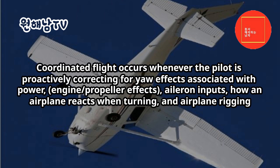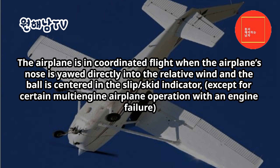Coordinated flight. Coordinated flight occurs whenever the pilot is proactively correcting for yaw effects associated with power and engine/propeller effects, aileron inputs, how an airplane reacts when turning, and airplane rigging. The airplane is in coordinated flight when the airplane's nose is yawed directly into the relative wind and the ball is centered in the slip-skid indicator, except for certain multi-engine airplane operation with an engine failure.